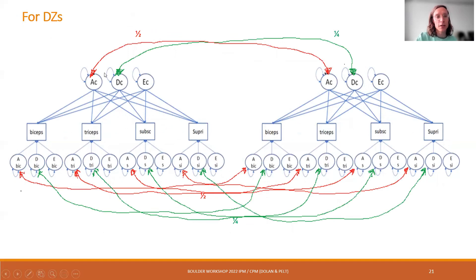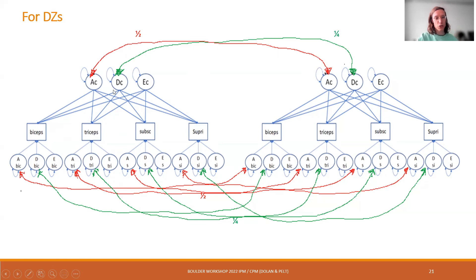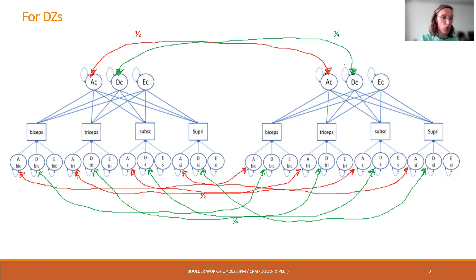This connection should not come as a surprise — you've seen this before. We connect the genetic effects across twins exactly the same way as in the multivariate or bivariate model: 0.50 and 0.25 for DZ twins. The only difference compared to the unconstrained ADE model is the independent pathway model structure we impose on the covariance matrices.